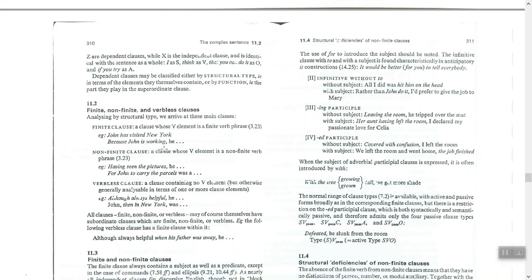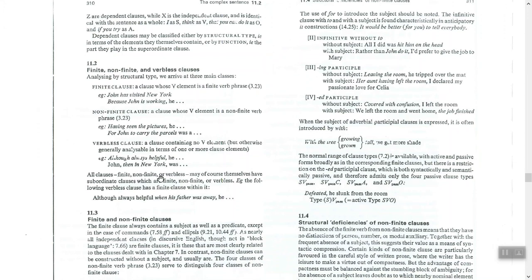A verbless clause, from its name, means a clause containing no verb but otherwise generally analyzable in terms of one or more clause elements. For example: 'although always helpful' — the origin of this could be 'although he is always helpful,' but we remove the verb. So we have no verb, and sometimes we don't even need a subject.